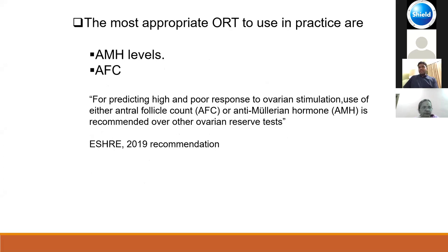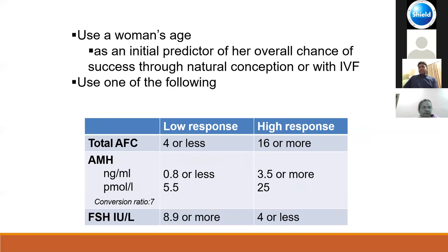The tests recommended by ESHRE are anti-Müllerian hormone, antral follicle count, and day 3 FSH measurement. Combining any two tests does not provide added benefit — any single test is enough. Tests not recommended include ovarian volume, ovarian blood flow, inhibin B levels, estradiol as an individual test, and the clomiphene citrate challenge test. Antral follicle count less than 4 is low response and 16 or more is high response; AMH levels of 0.8 or less is low and 3.5 or more is high.